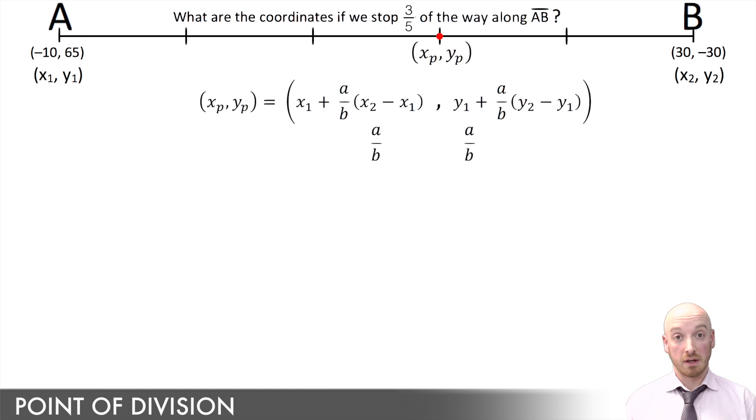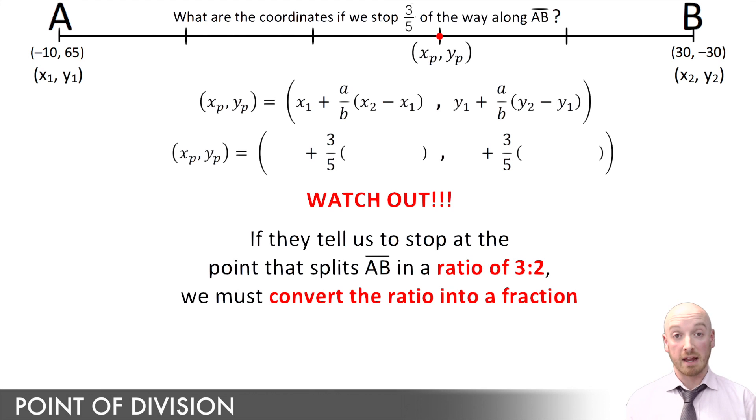Now, second, about that fraction, A over B, you see it repeated twice in this equation. It's given in the question. That's the fraction 3 fifths of the way that they gave us. So all I have to do here is take that fraction 3 over 5 and plug it into the two parts of the formula where I see that A over B. Now, on an exam, they might try to trick us by giving a ratio instead of a fraction. So they might say you're traveling from A to B, and you stop at the point that divides the line in a ratio of 3 to 2. Well, all I need to do is convert that ratio into a fraction and then plug it in for A over B.